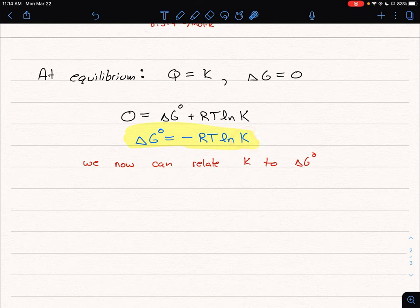Or if we determine the equilibrium constant of a reaction we can now back calculate and figure out what is the delta G naught of that reaction.